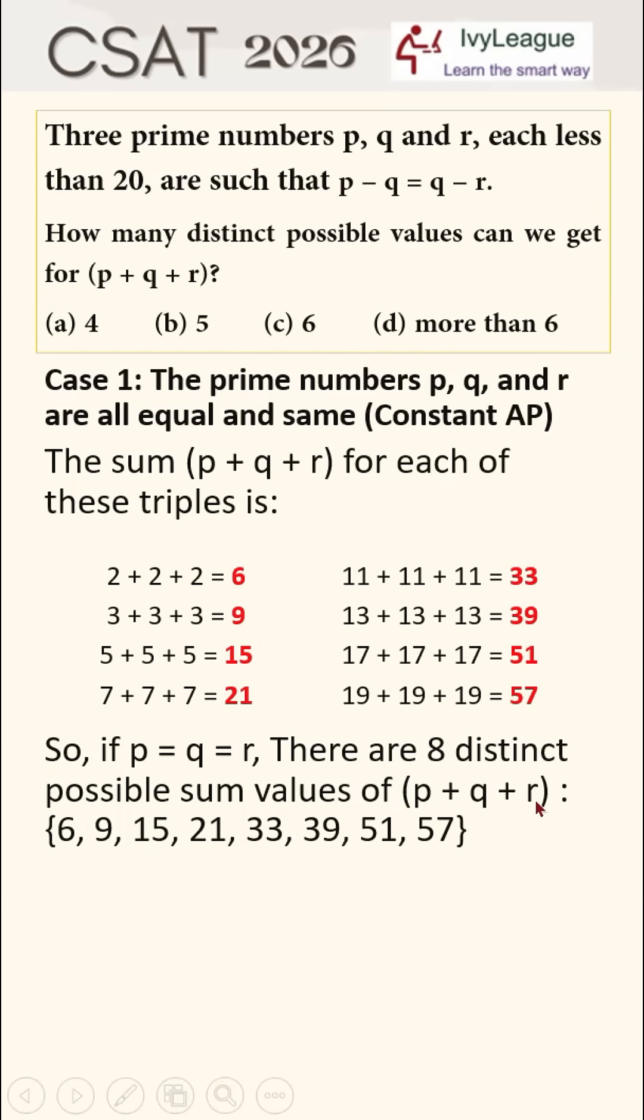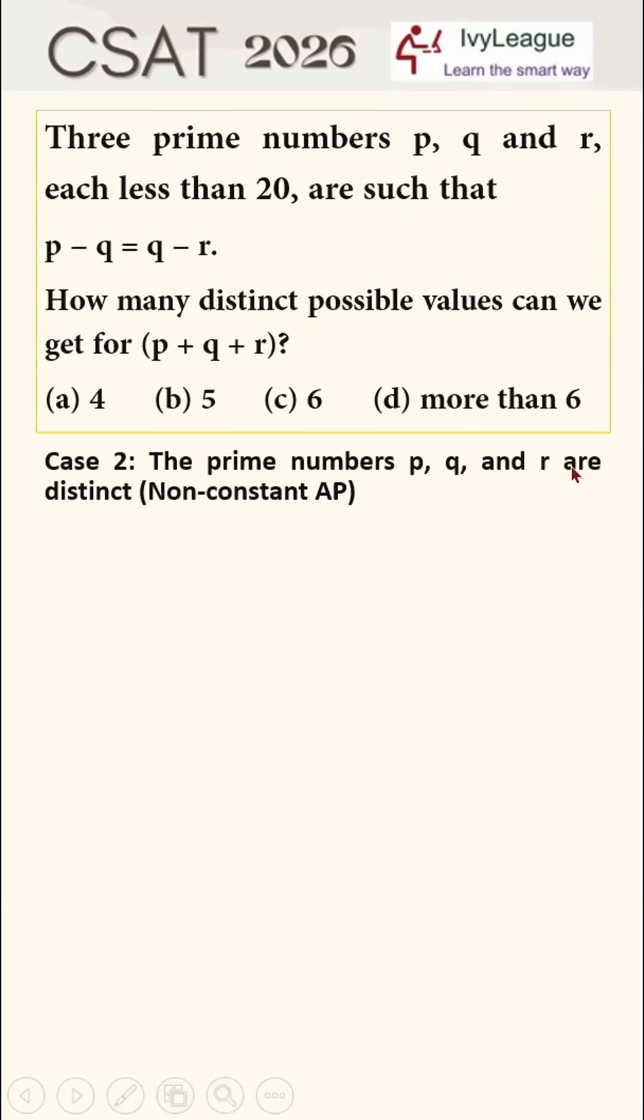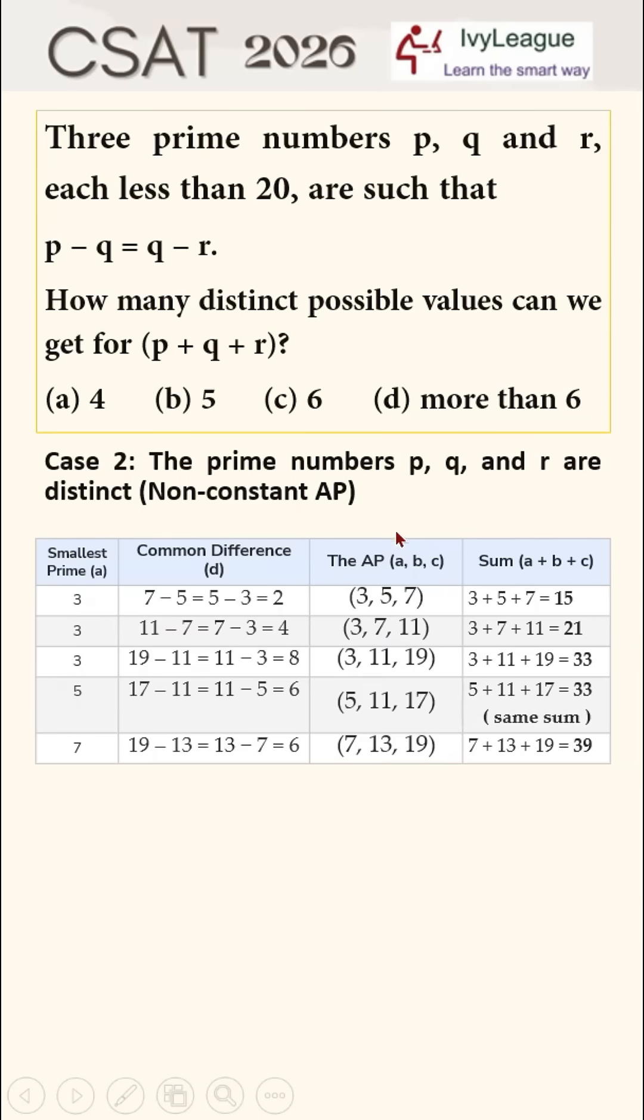Case number two, where the prime numbers p, q, and r are distinct, and this becomes a case of non-constant AP. Now you can see that 7 minus 5 is equal to 5 minus 3, 11 minus 7 is equal to 7 minus 3, 19 minus 11 is equal to 11 minus 3, 17 minus 11 is equal to 11 minus 5, 19 minus 13 is equal to 13 minus 7.